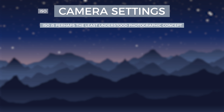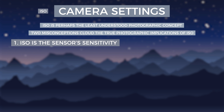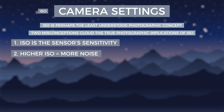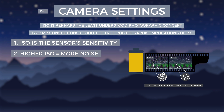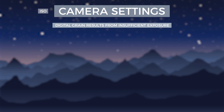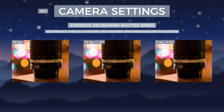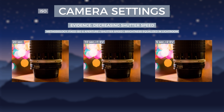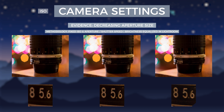ISO is a principle of photography often misunderstood. Two misconceptions derived from the days of film cloud the true implications of ISO: the first is that ISO is the sensitivity of the image sensor, and the second is that higher ISO values cause more grain in images. These statements were true in the days of film, when sensitivity was determined by physical light-sensitive silver halide crystals, appearing as grain once developed. Grain in digital photos can be primarily attributed to a lack of exposure, either from using shorter shutter speeds or smaller apertures. To exemplify this, I took three separate photos — leaving ISO and aperture the same — but cutting shutter speed in half from 20 seconds to 10 seconds and finally to 5. Brightening the last two images by one and two stops respectively, and zooming in at 100%, it's clear noise increases as shutter speed decreases. The same results are realized when only decreasing aperture size.